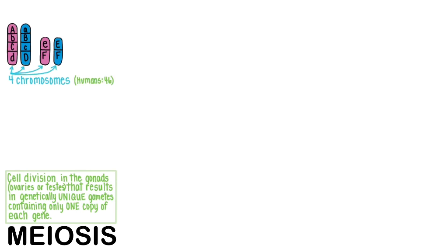Human body cells have 46 chromosomes each, but as much as I love drawing, I'm not going to draw all 46 for you. In our example then, there are two homologous pairs. Homologous pairs are numbered in order of size, like these two pairs.